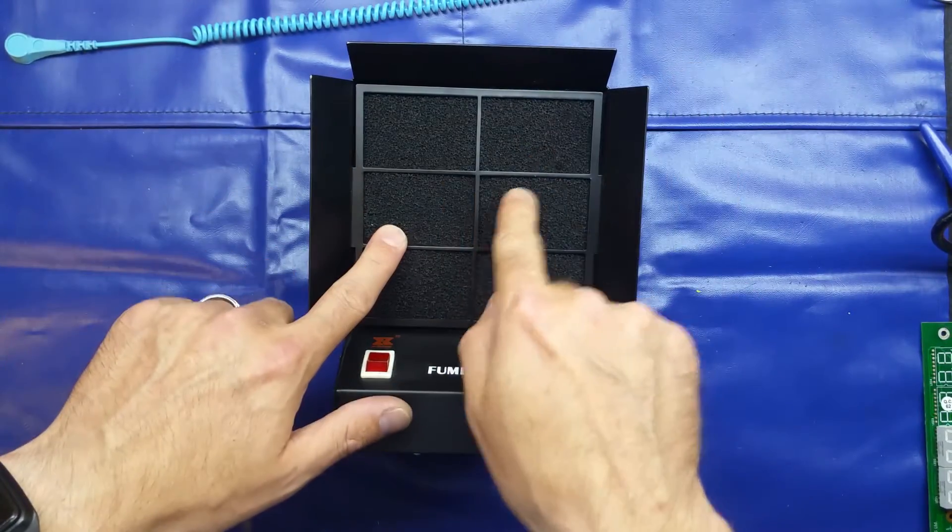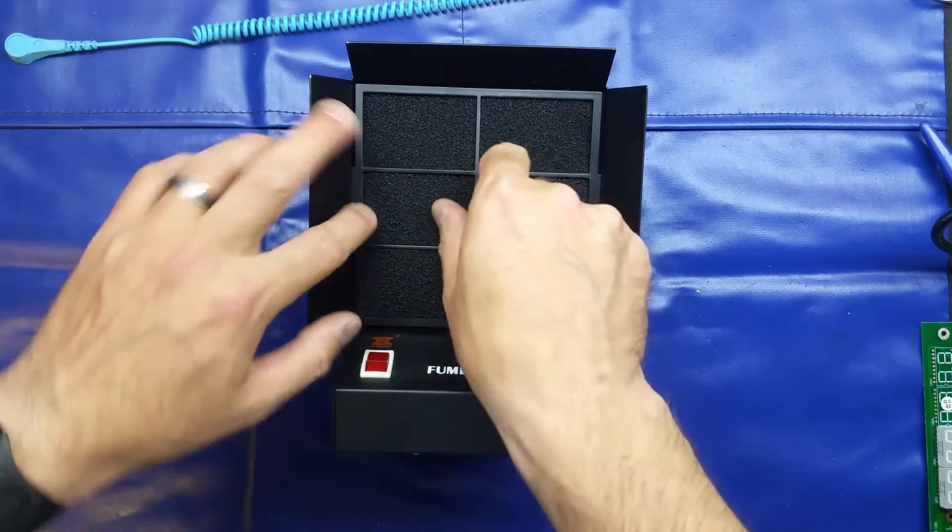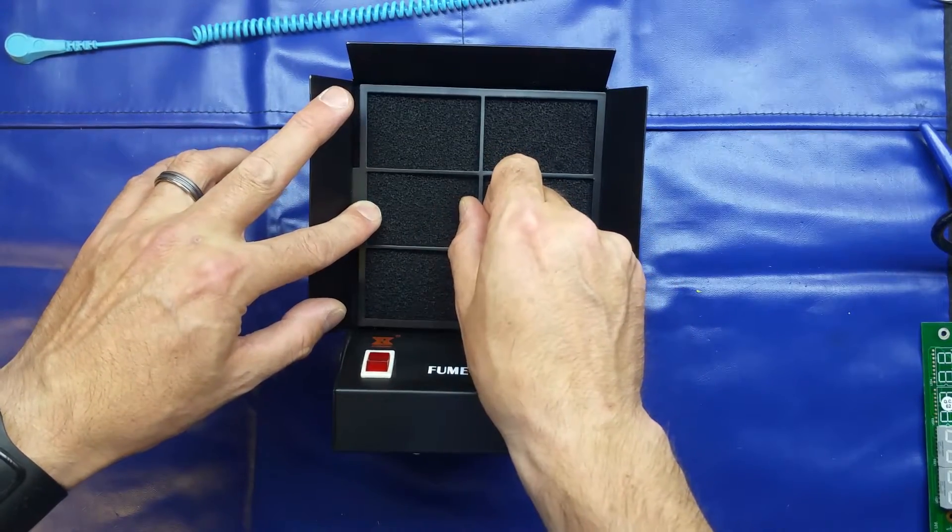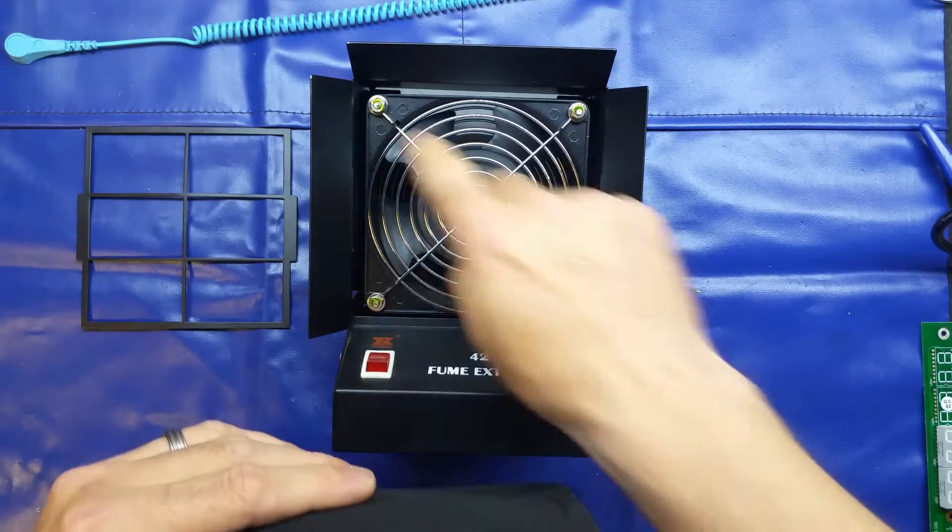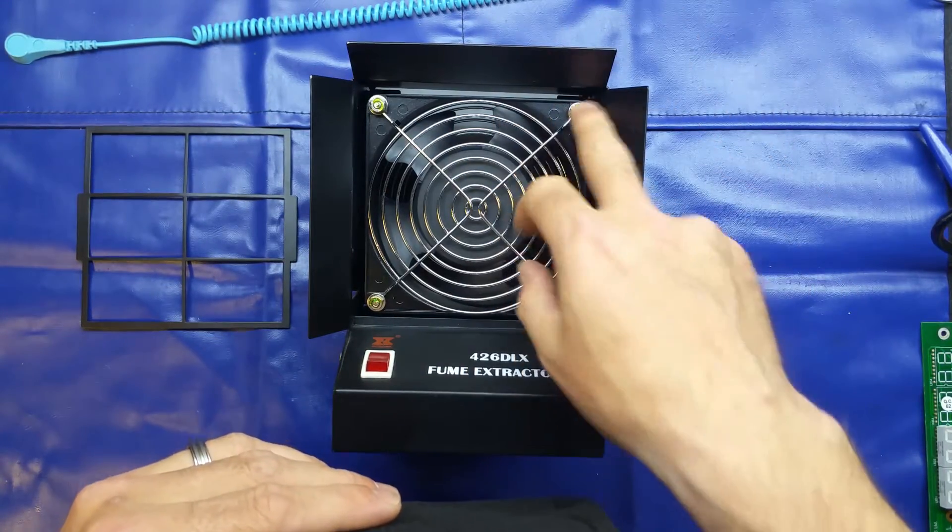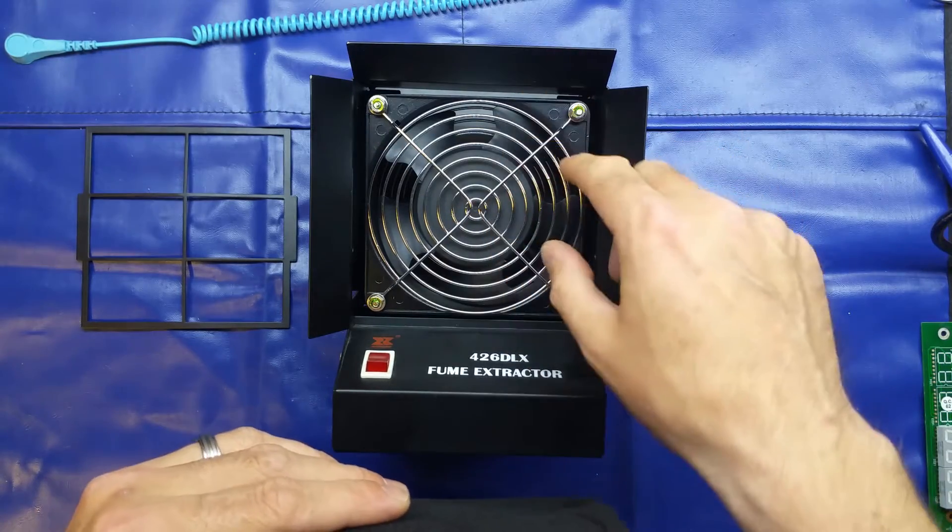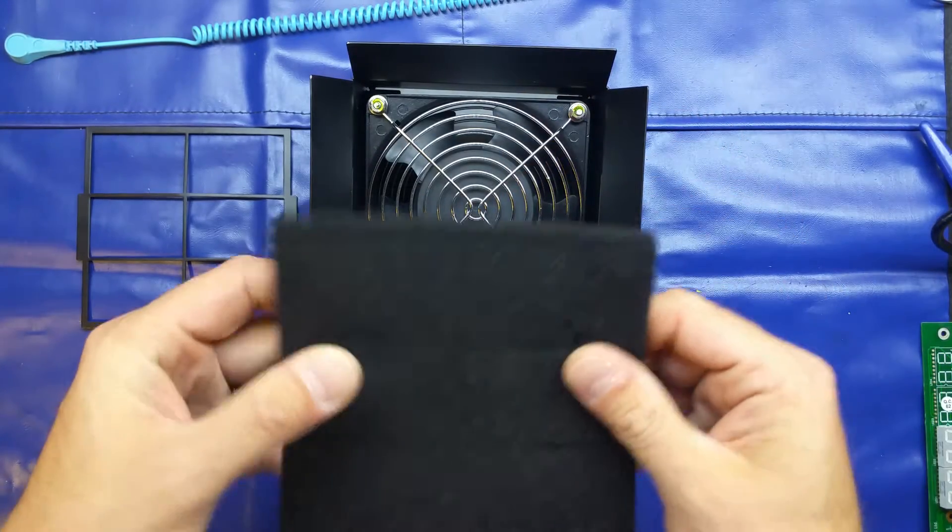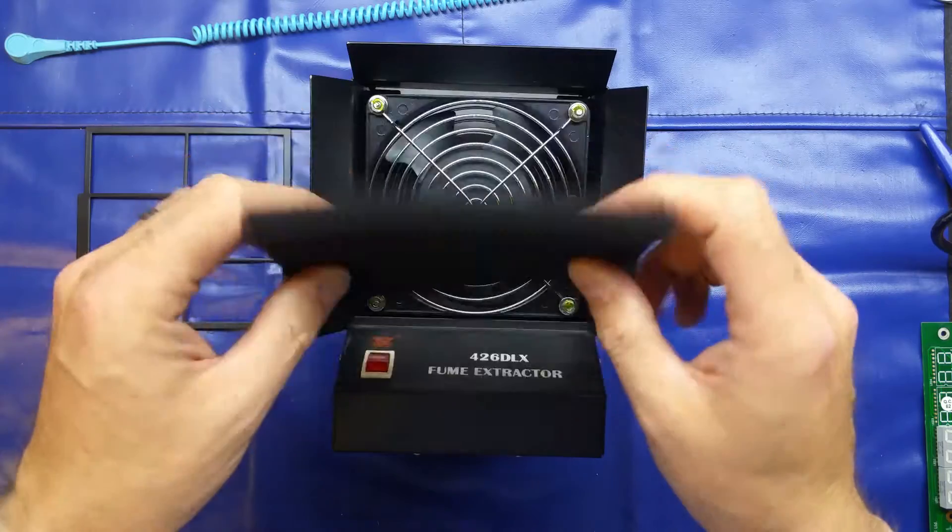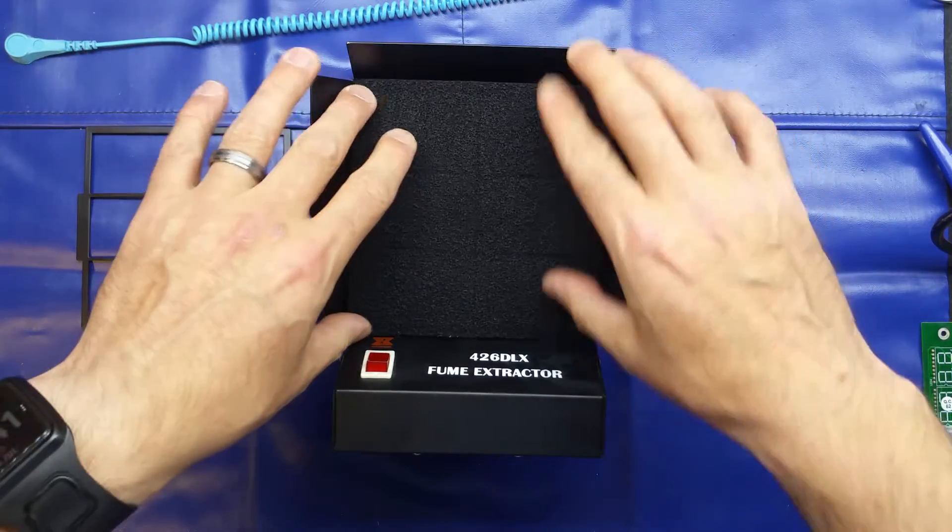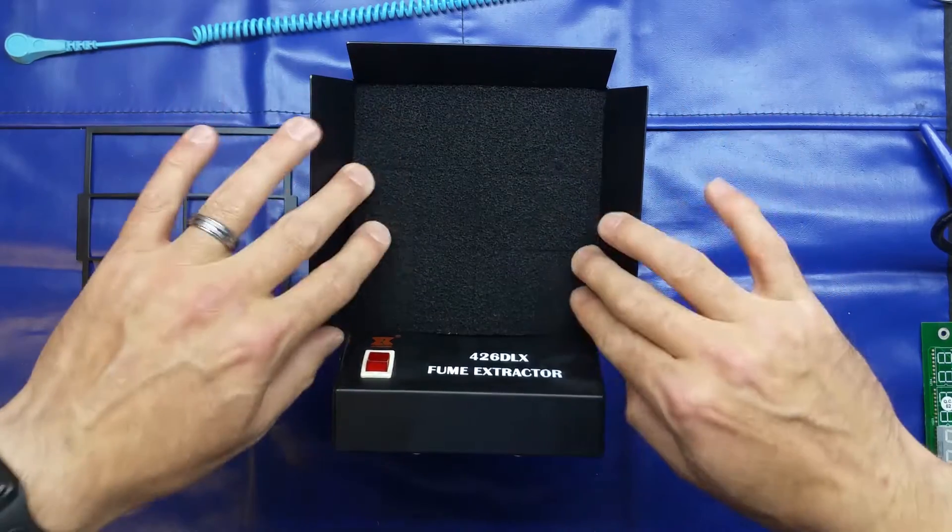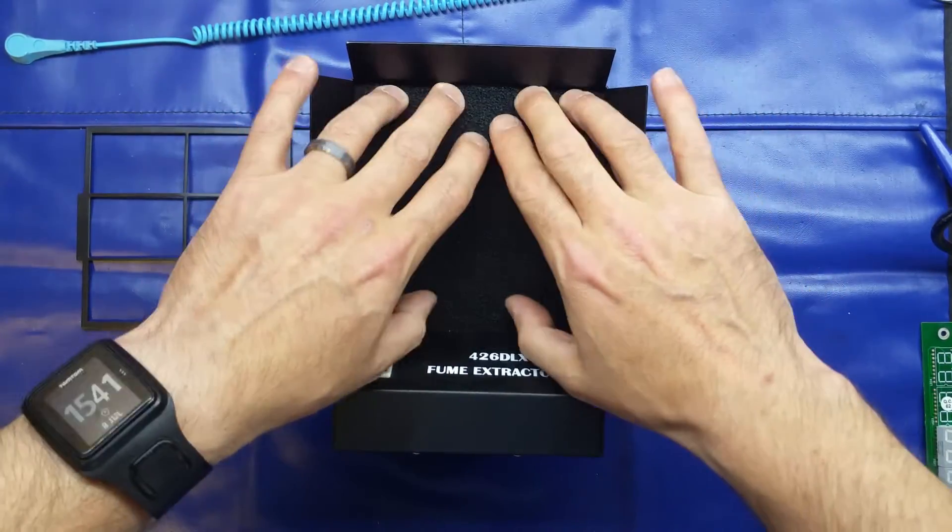And to remove the grille and the filter, you just pull up in the middle whilst laying it to one side, and that'll allow you to remove the filter. And this exposes this fan, which is an alloy body mains-powered fan. The filter's about 13cm square, about a centimeter thick, and they're quite easy to come by, replacements.